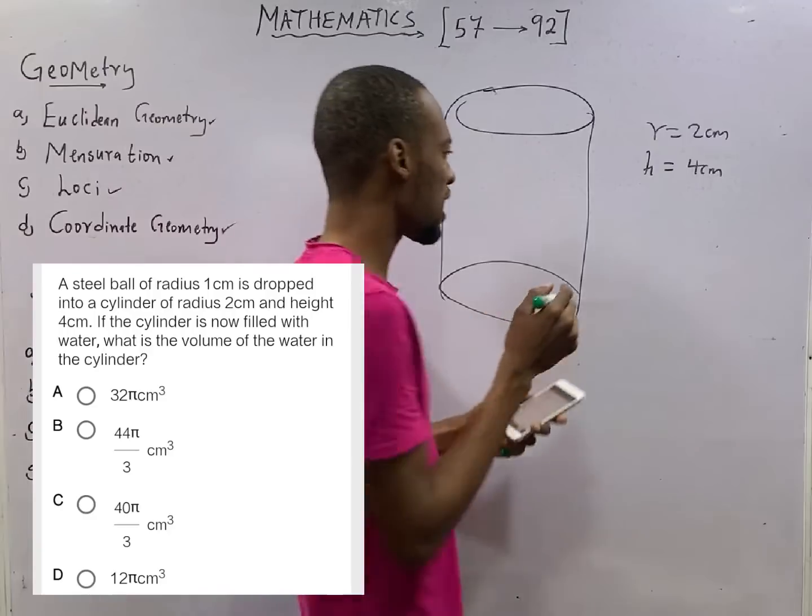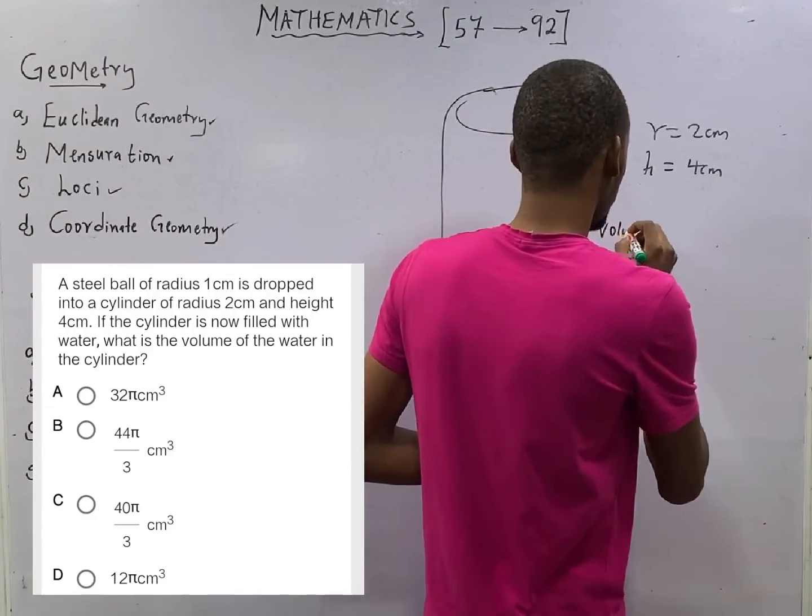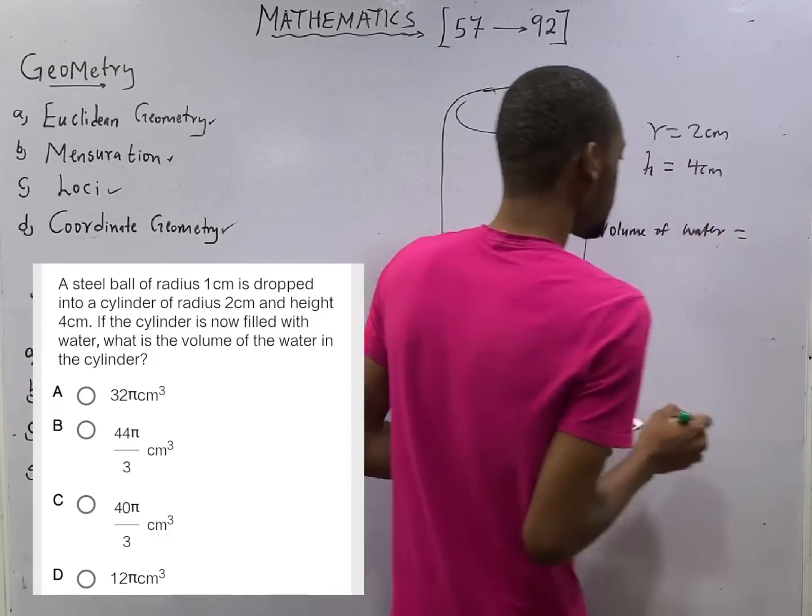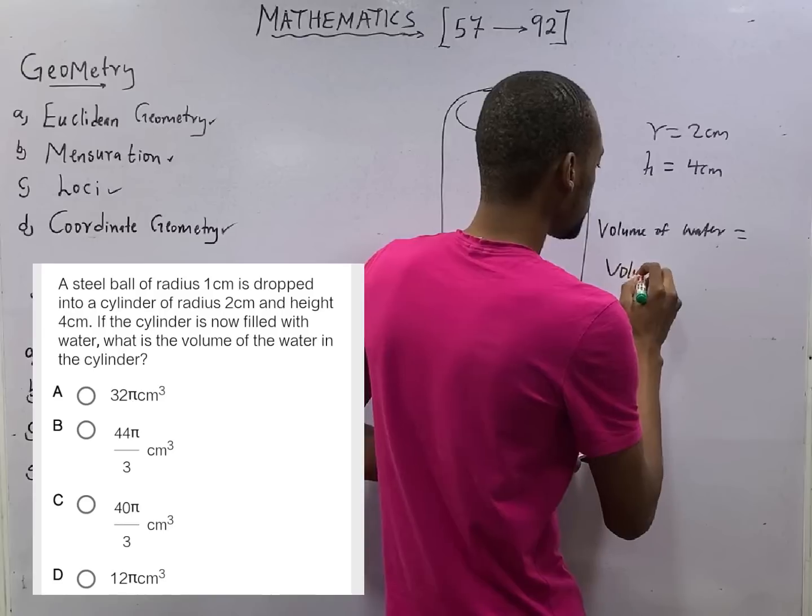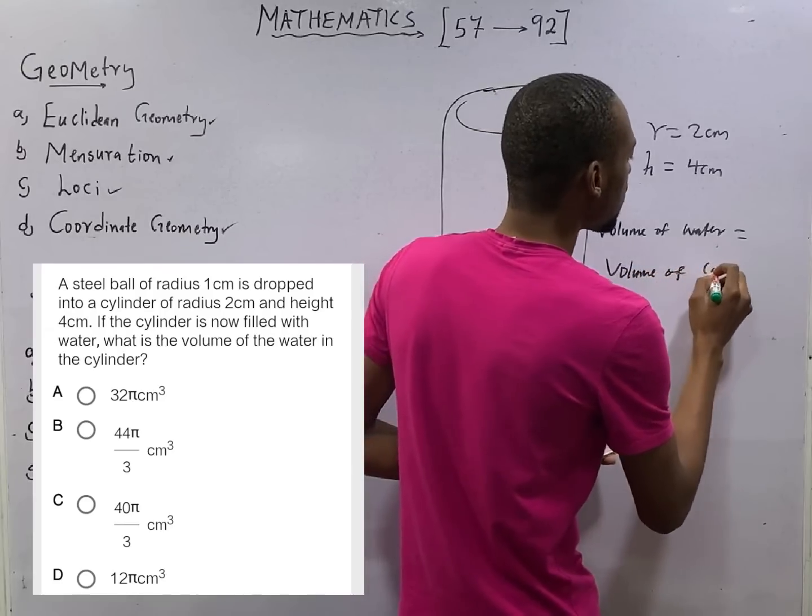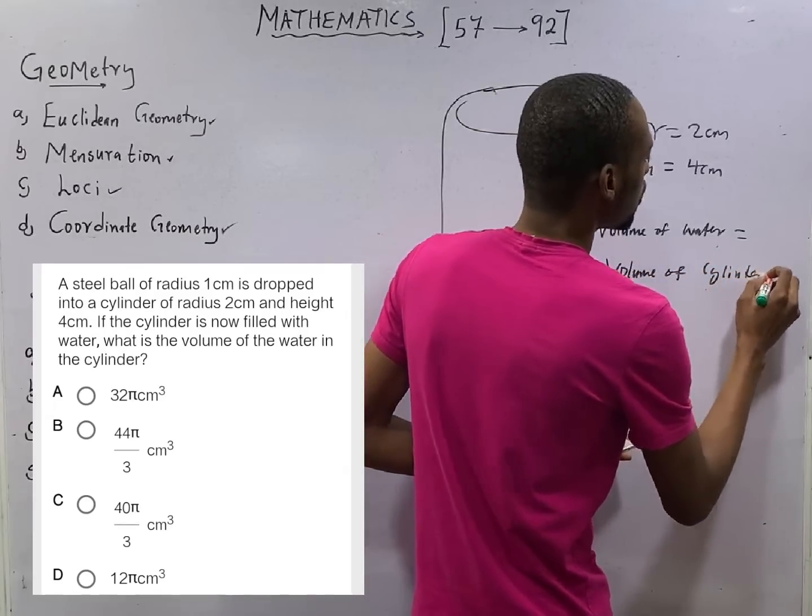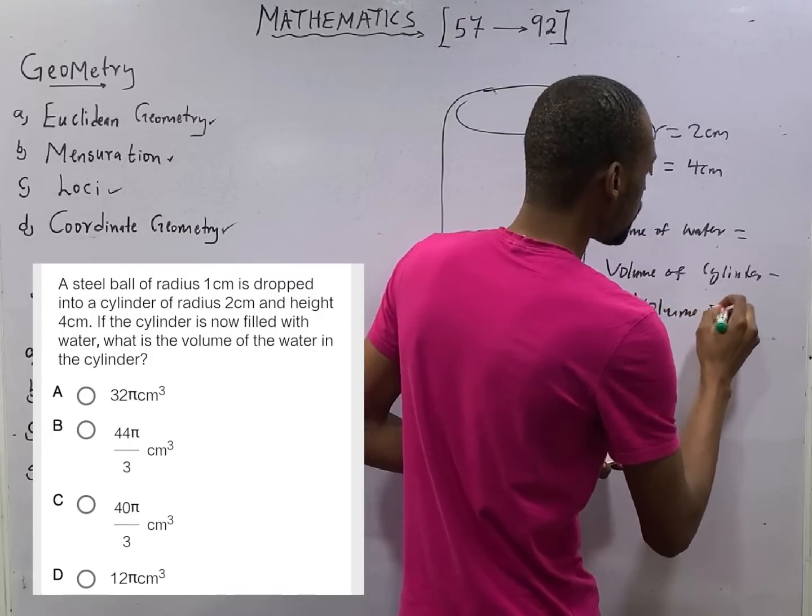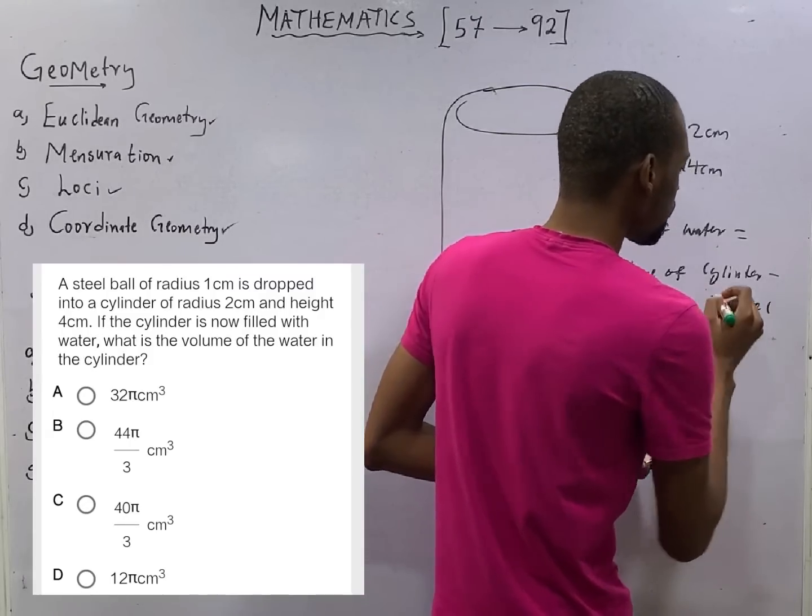Volume of water will be equal to the volume of cylinder minus volume of steel. Look at this.